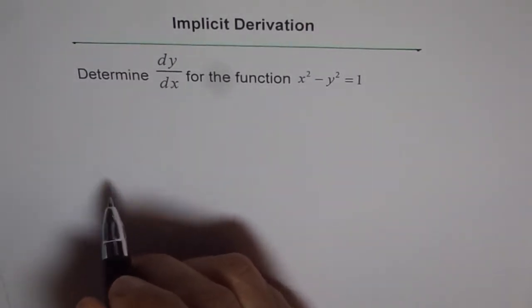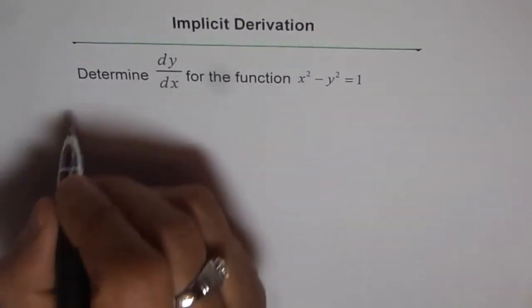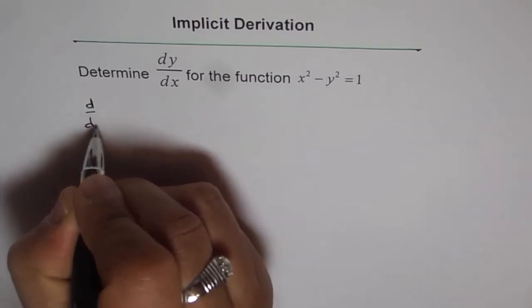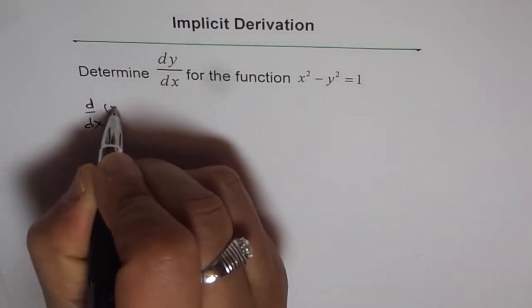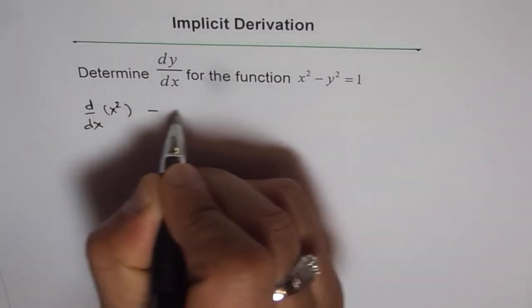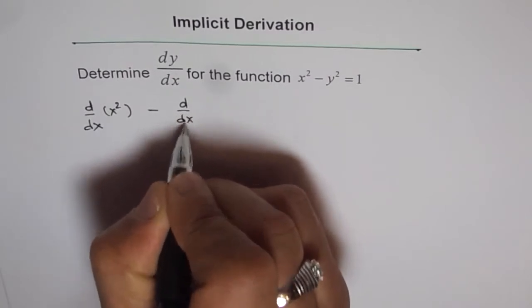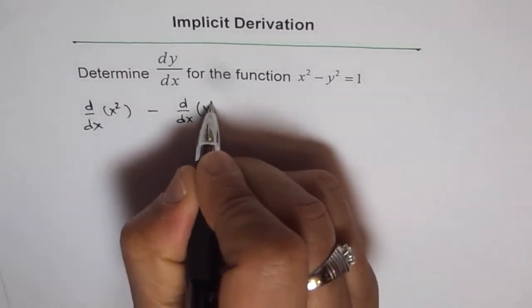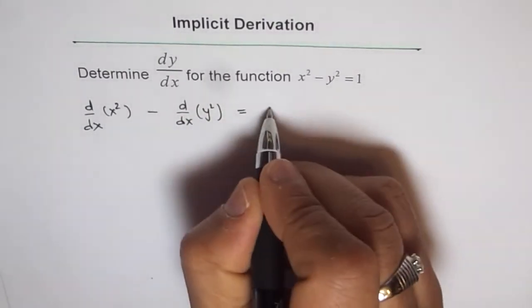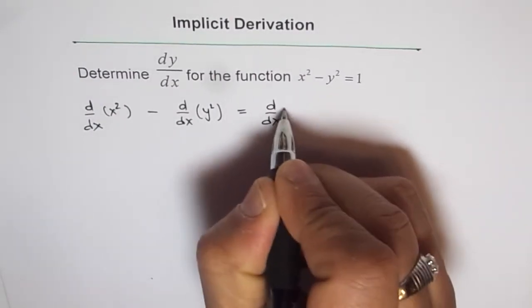We will differentiate both sides with respect to x. So we have d/dx of x² minus d/dx of y² equals d/dx of 1.